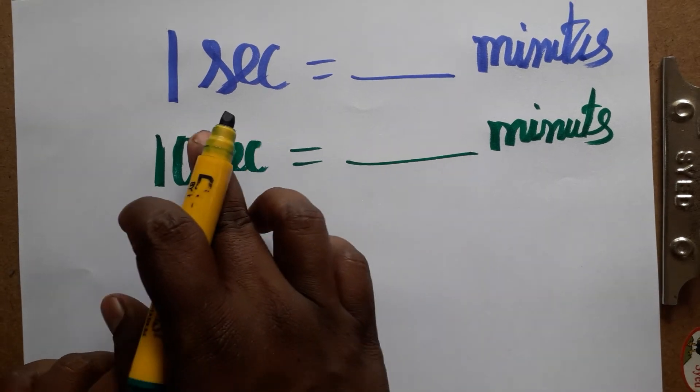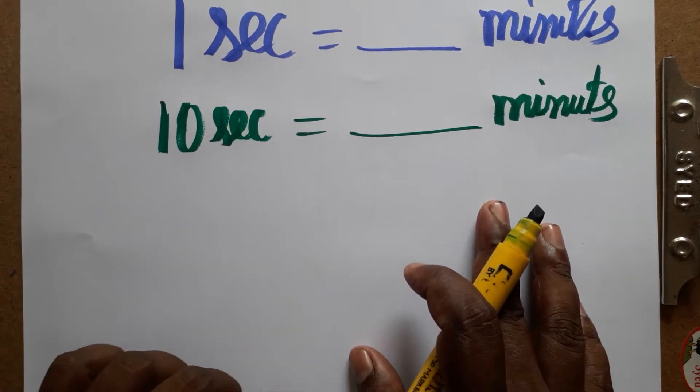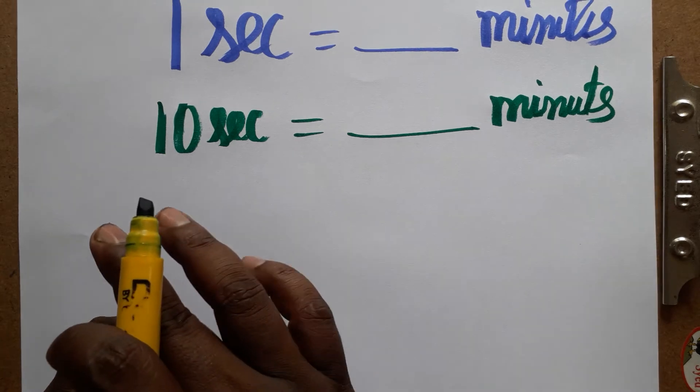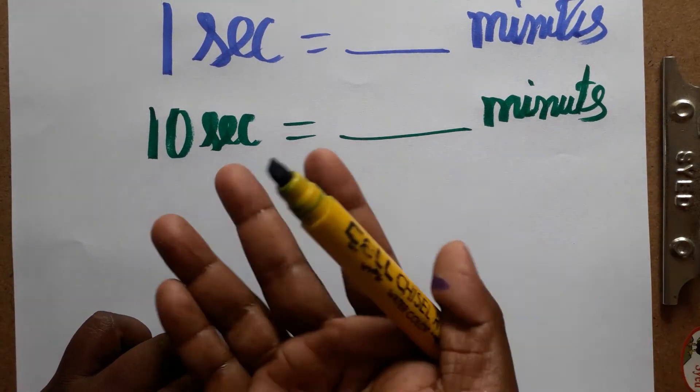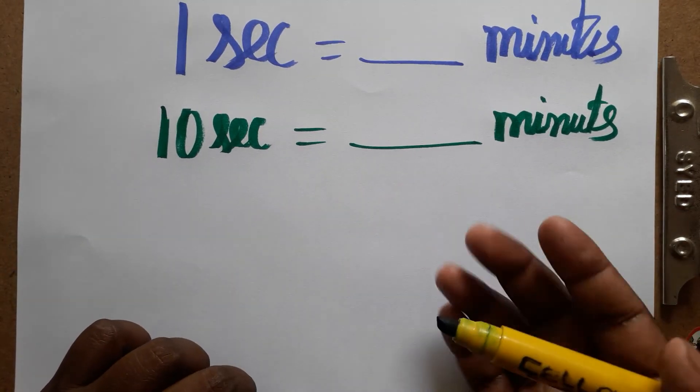So friends, today we are going to learn how to convert from seconds to minutes. For example, 1 second equals dash minutes, 10 seconds equals dash minutes. Even 10, 20, 30, whatever—the same calculation you can do.